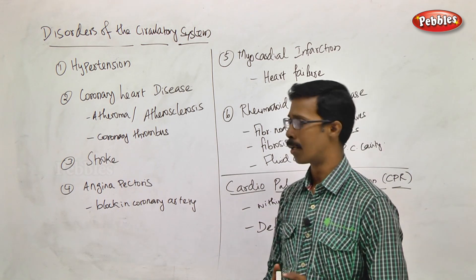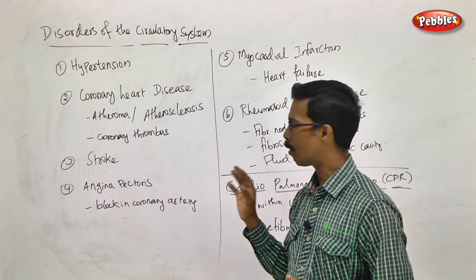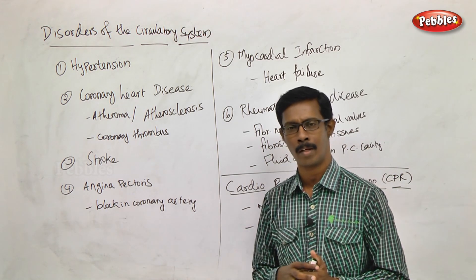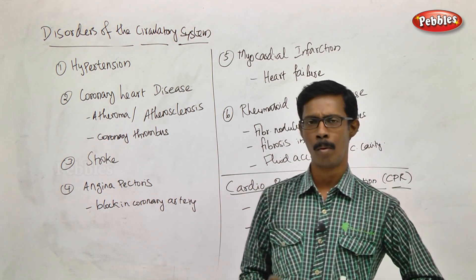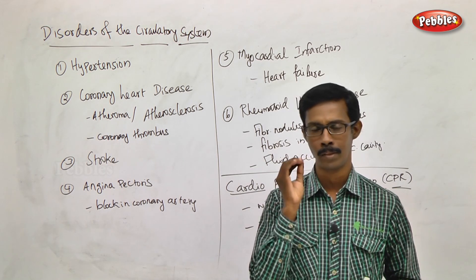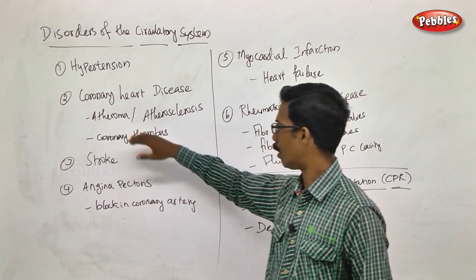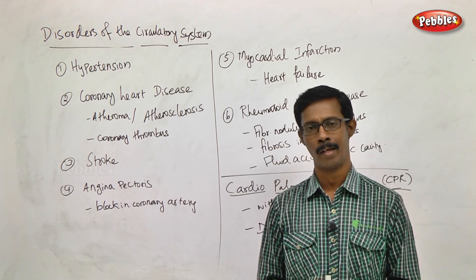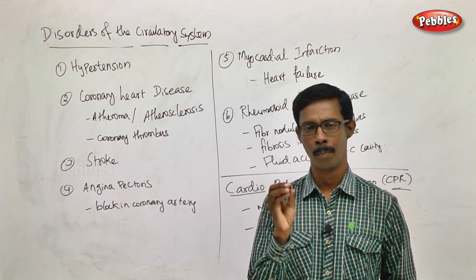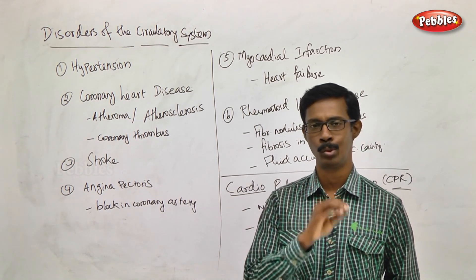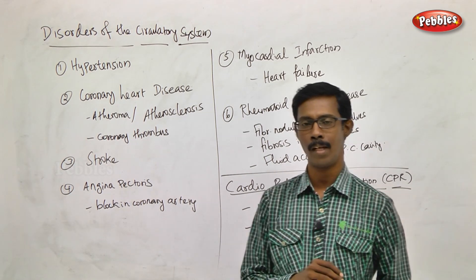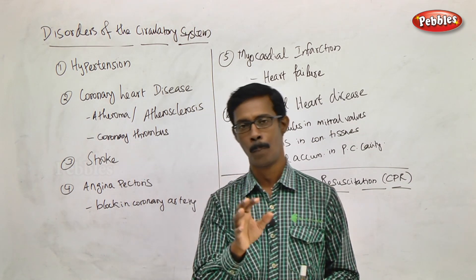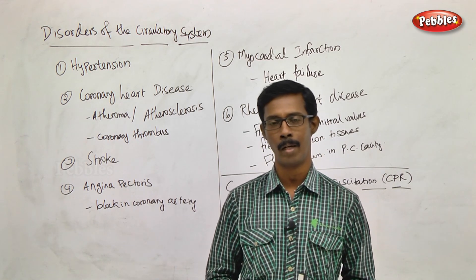Another disorder is coronary heart disease. What is coronary heart disease? One common problem is the deposition of material such as atheroma, cholesterol, fibers, tissues, and platelets. There is a deposit forming a plaque in the form of atheroma in the blood vessels.